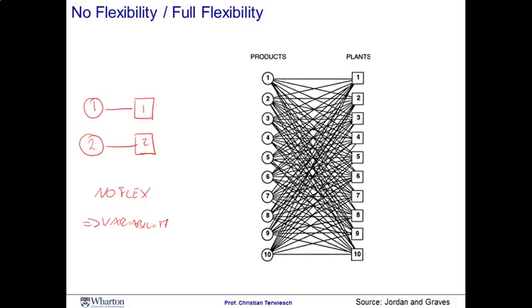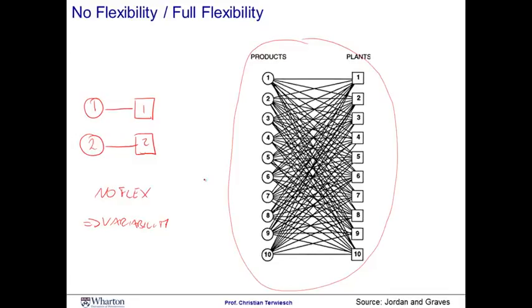Ideally, what we would love is a plant network where every plant would be able to make every one of the products. This is the most flexibility that we can ever hope for, and we would get the full benefits of pooling that we discussed in the earlier session. The downside of such fully flexible plant network is that you're going to have lots of setups at each of the production settings.